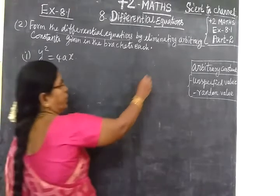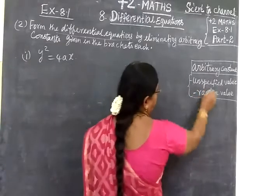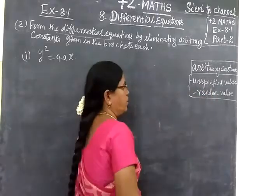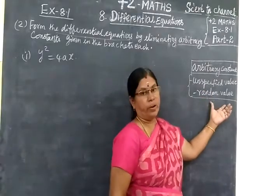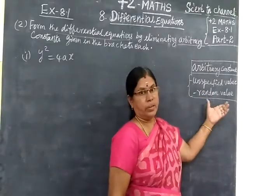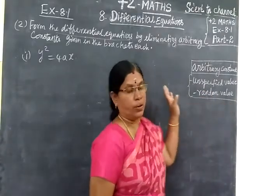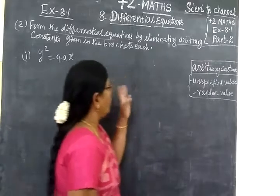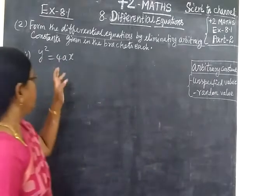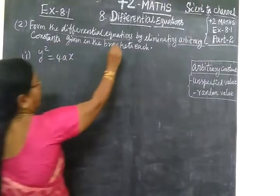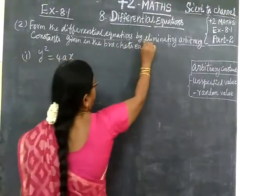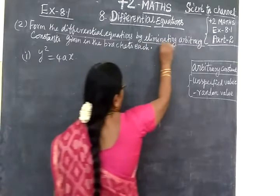Arbitrary constants — everything comes with an unspecified value, random value, not a fixed value. It has a random value. In the arbitrary constant, we remove — eliminate. Eliminate means we are removing.